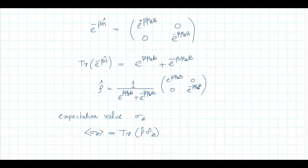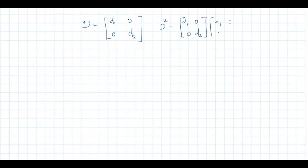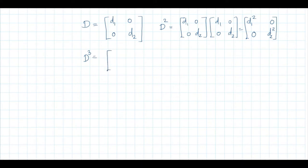If a matrix D is diagonal with elements D1 and D2, then D² has diagonal elements D1² and D2², D³ has D1³ and D2³, and in general D^n has D1^n and D2^n. So for a diagonal matrix, raising to a power simply raises each diagonal element to that power.